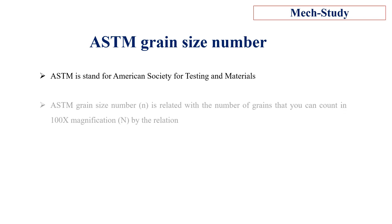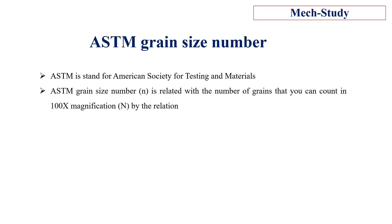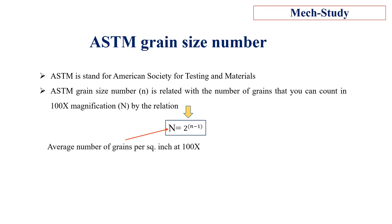The ASTM grain size number, denoted by small n, is related to the number of grains that you can count at 100x magnification by the relation N = 2^(n-1), where capital N is the average number of grains per square inch at 100x magnification.